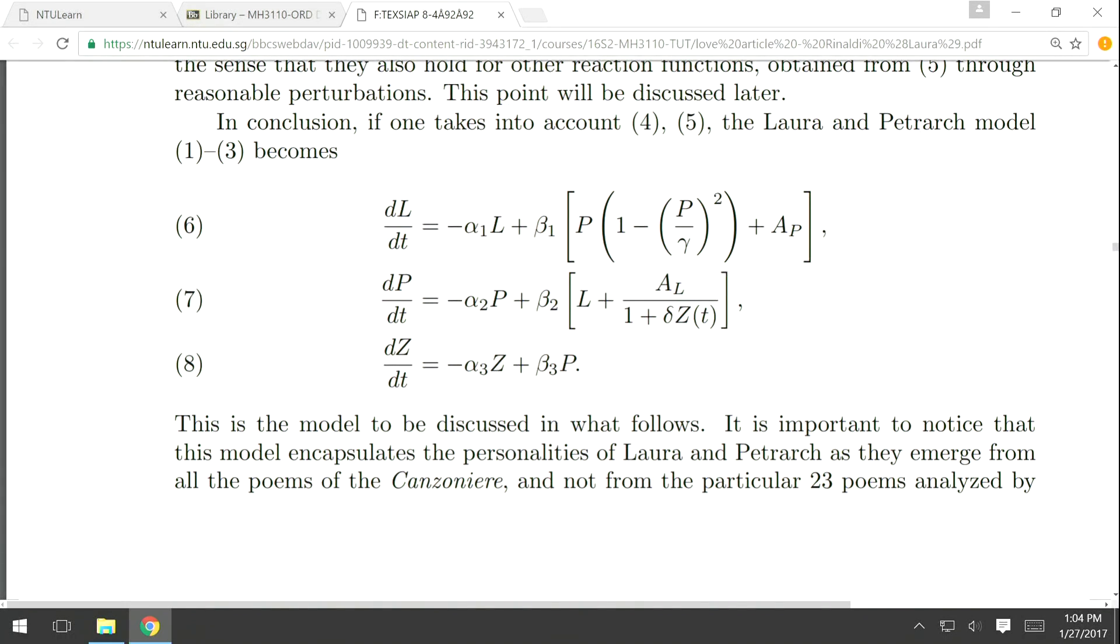These are specific constants that will be found later. The idea is that this system of differential equations somehow captures the true relation between Petrarch and Laura. L is Laura's emotion towards Petrarch, P is Petrarch's emotion towards Laura, and Z is the internal source of poetic inspiration.